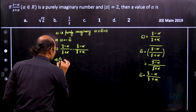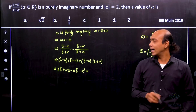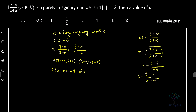Cross multiplying gives (z − α)(z̄ + α) = −(z̄ − α)(z + α). Expanding the left side: z·z̄ + αz − αz̄ − α². Expanding the right side with the minus sign: −z·z̄ − αz̄ + αz + α².